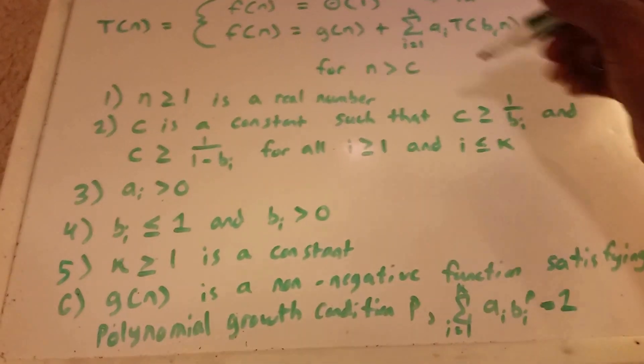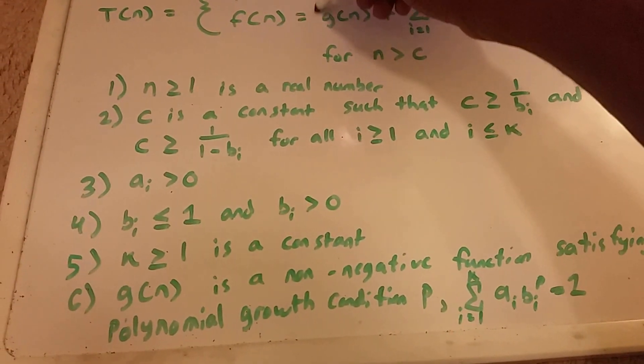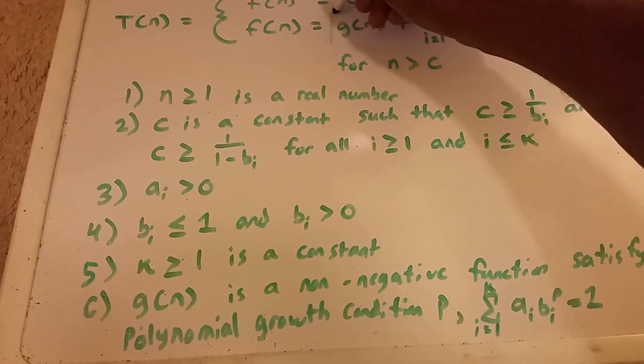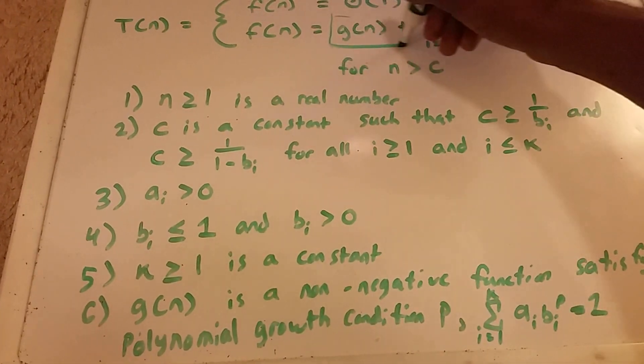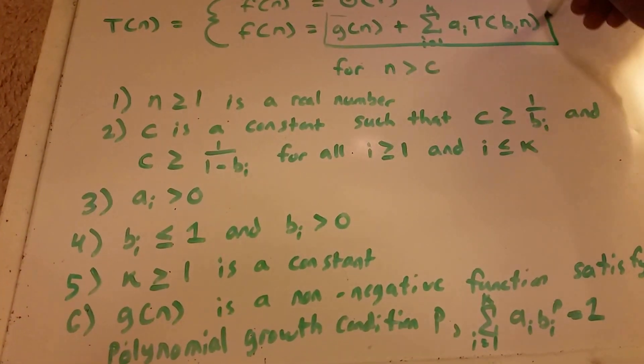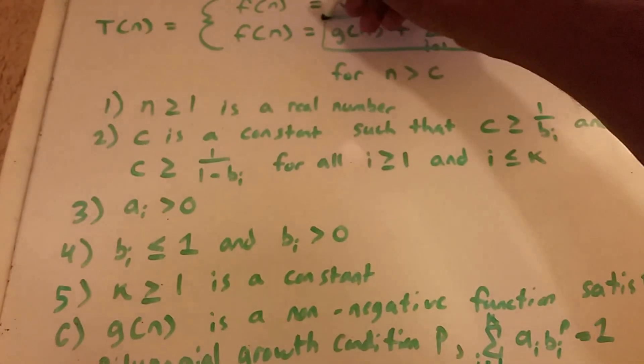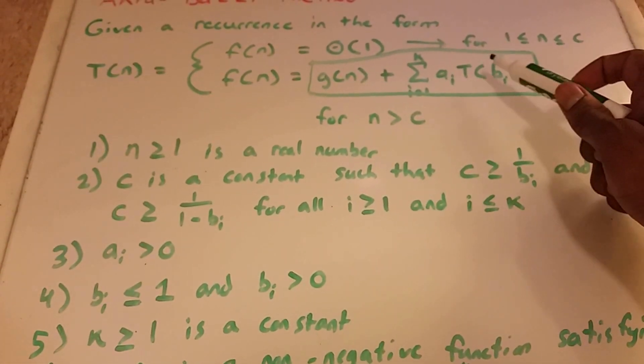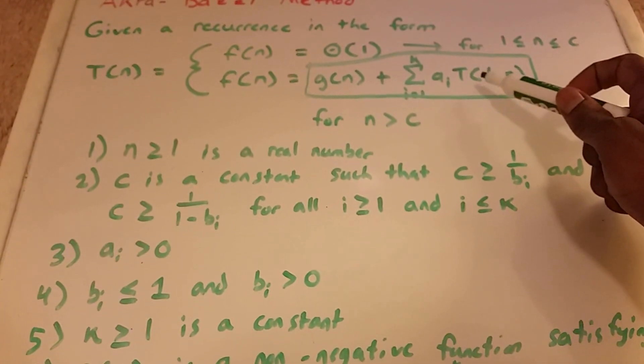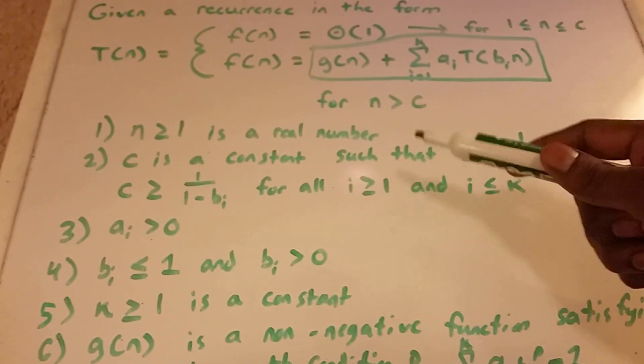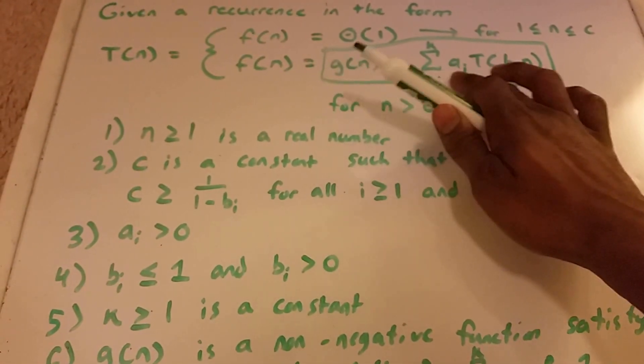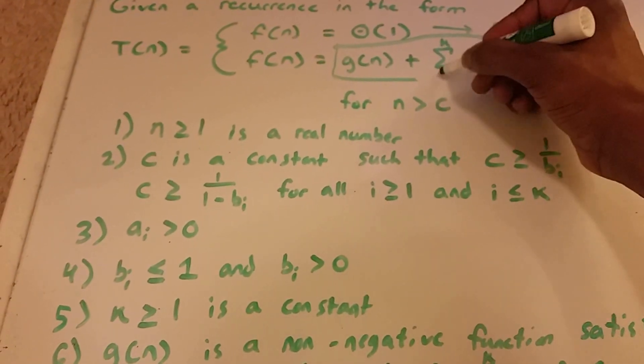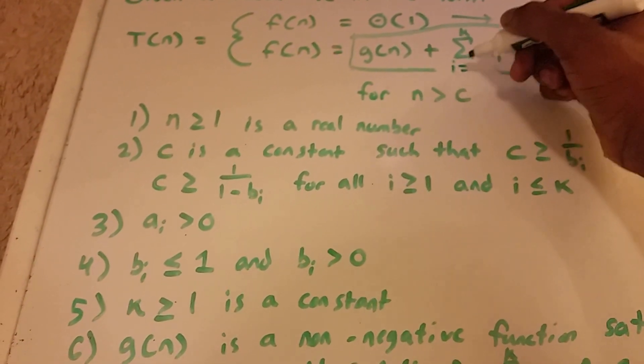So basically, we have to remember that our recurrence must be in this form here. I'm going to highlight this a little bit. So if we're given a recurrence basically in this form here, and given these conditions, we can now use their method.